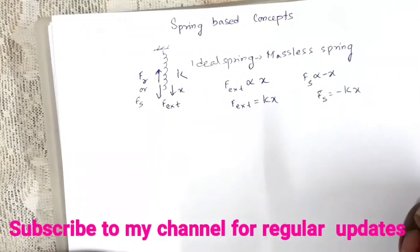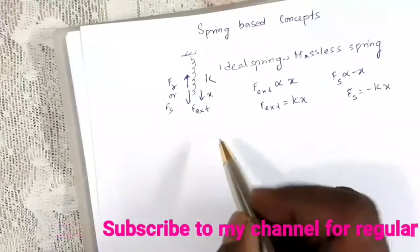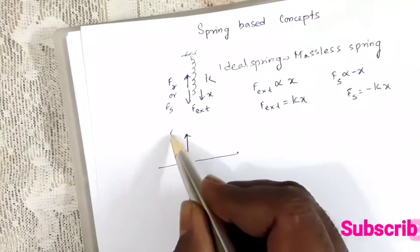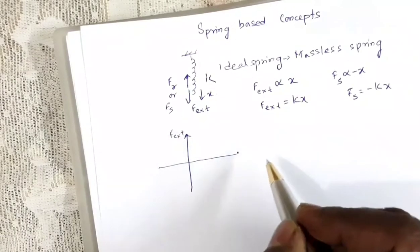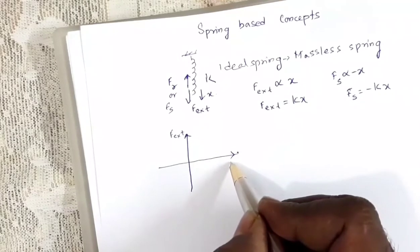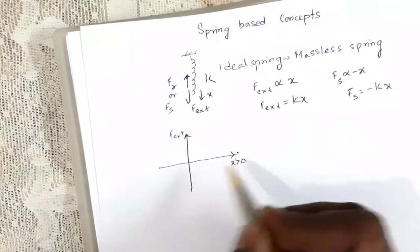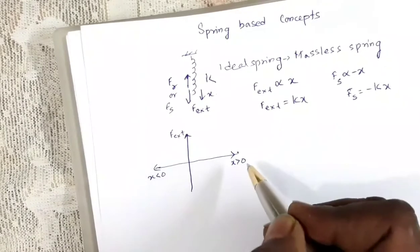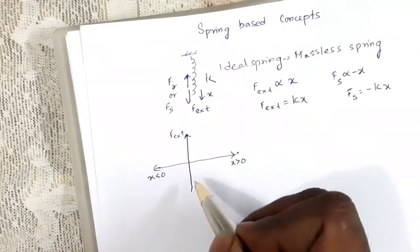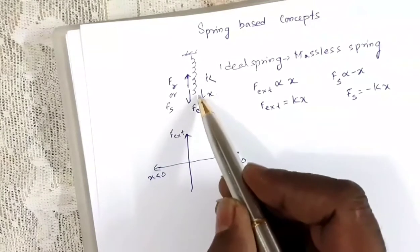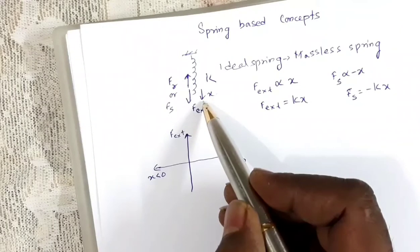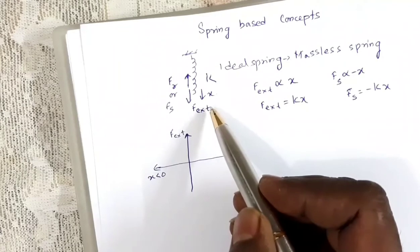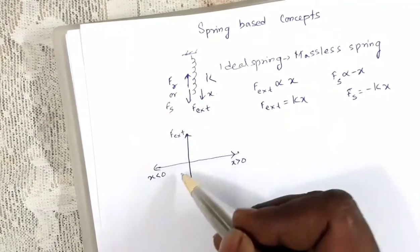Now if I draw a graph between external force and extension: the positive x side represents extension in the spring, and the negative x side represents compression. In the case of extension, x is in the downward direction and the external force also acts downward — both are in the same direction and proportional — so we get a straight line.